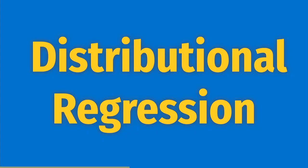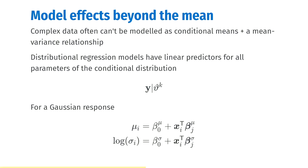The next part of our model is the distributional regression part. Complex data often can't be modeled as conditional means plus a mean-variance relationship as we would have in a GLM. Distributional regression models have linear predictors for all of the parameters of the conditional distribution — if there are k parameters, we have k linear predictors.